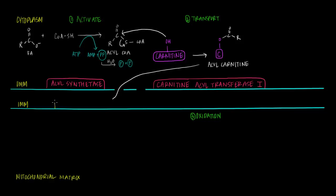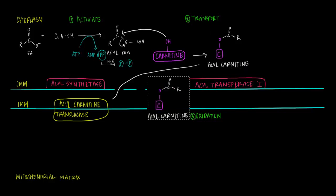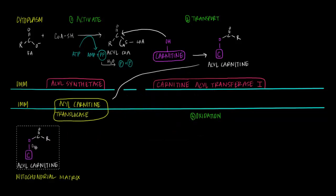What the inner mitochondrial membrane does have is a protein transporter called acyl-carnitine translocase. Already its name gives you a clue that it's going to recognize the acyl-carnitine molecule we worked so hard to create. Just as its name suggests, it's going to translocate this acyl-carnitine from the intermembrane space into the mitochondrial matrix. I'm going to copy and paste this molecule from the cytoplasm to the mitochondrial matrix, extending our path from the intermembrane space, facilitated by this protein transporter.